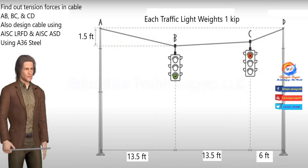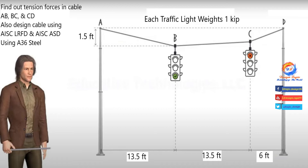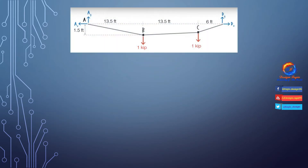In this video we will analyze and design traffic light cables of unsymmetrical structure. Traffic lights having one kip weight hang with a cable supported at joints A and D. Horizontal distance A to B equals B to C equals 13.5 feet, and C to D equals 6 feet. Vertical distance A to B equals 1.5 feet. We will find tension forces in cables ABC and CD, then design the cable using A36 steel with AISC LRFD and AISC ASD codes.